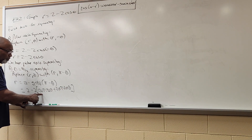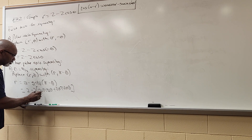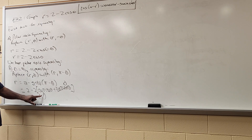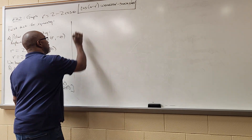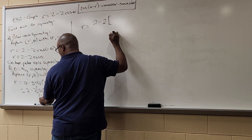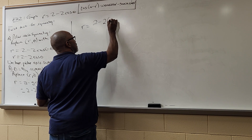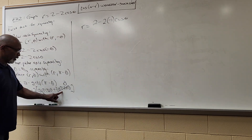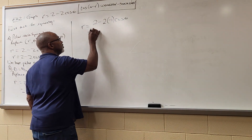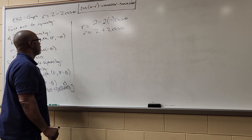From the unit circle, cos π = -1 and sin π = 0, so the sine term goes to zero. We get r = 2 - 2(-1)cos θ, which simplifies to r = 2 + 2cos θ. Since my original function was r = 2 - 2cos θ and I got r = 2 + 2cos θ, these are not the same.